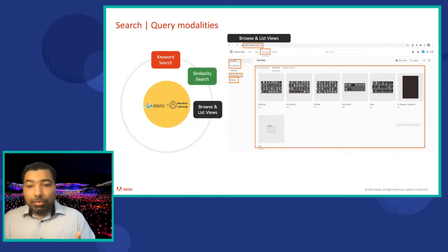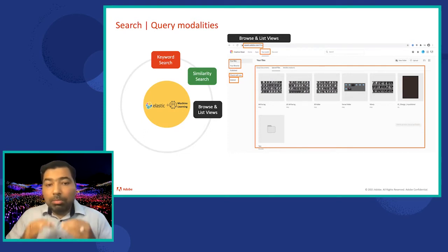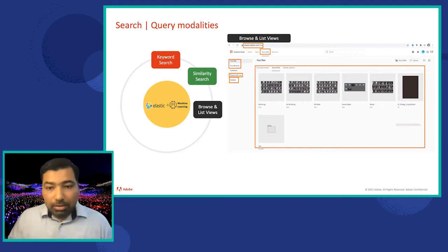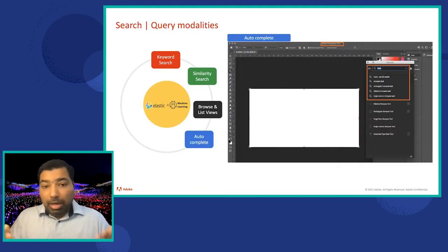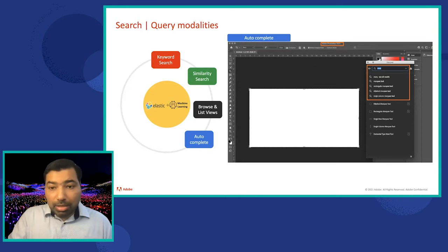The third modality is browsing and list views. As I mentioned, if you go to assets.adobe.com, wanting to see all files or artifacts you've created, things shared with others, deleted views — all of these are powered by the search and discovery platform. And autocomplete: if you go to the Discover Panel and start typing, say 'Marquee,' you start getting suggestions.